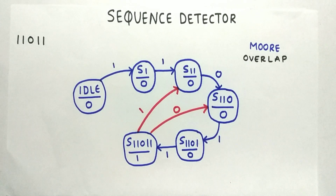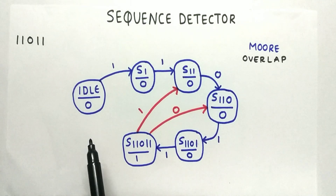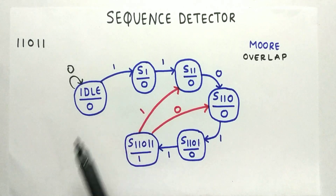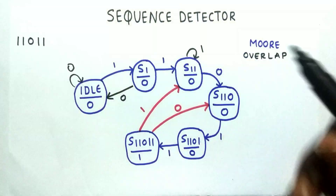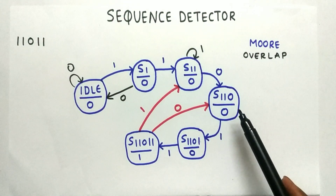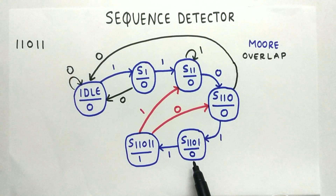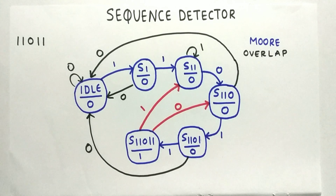Now let us fill in the remaining transitions. At Idle, if the input is 0 we stay at Idle. At S1, if we get 0 we go back to Idle. At S11, if we get 1 we stay at S11. At S110, if we get 0 we go back to Idle. At S1101, if we get 0 we also go back to Idle. This completes the state machine for Moore overlap detecting 11011.